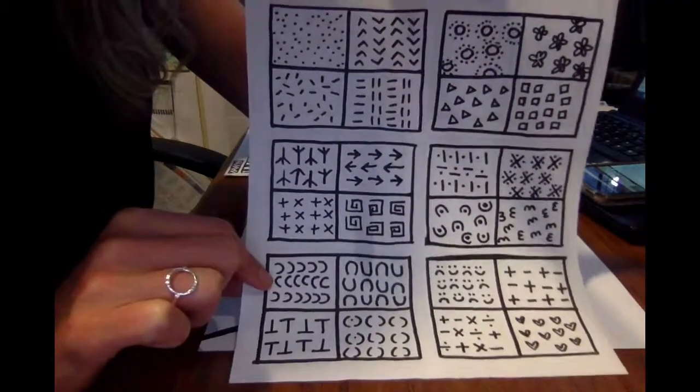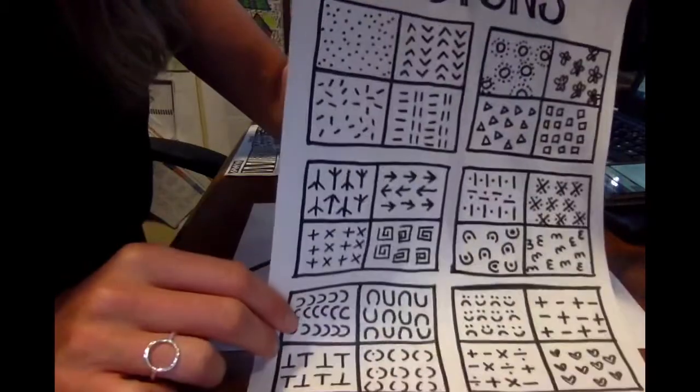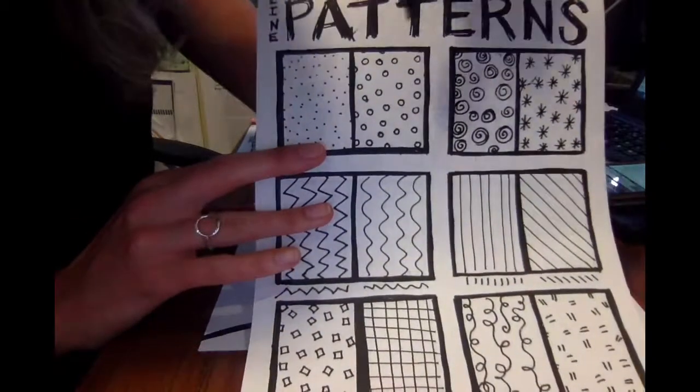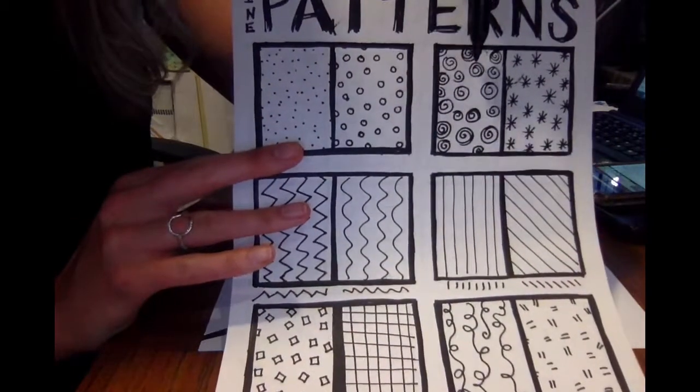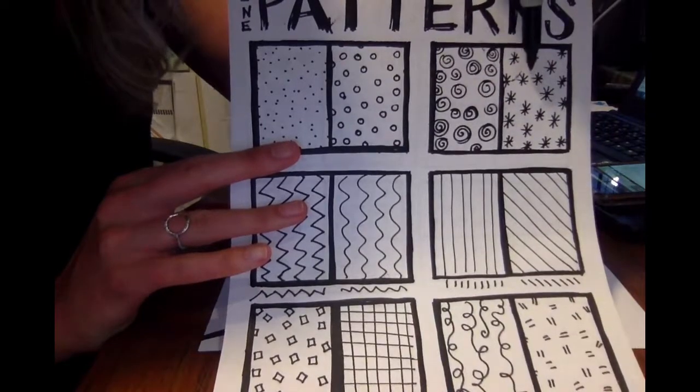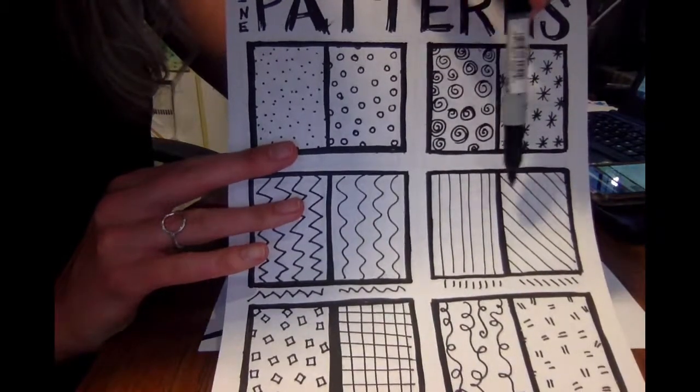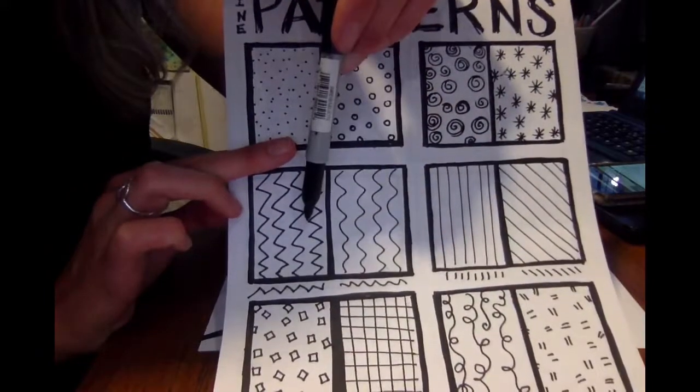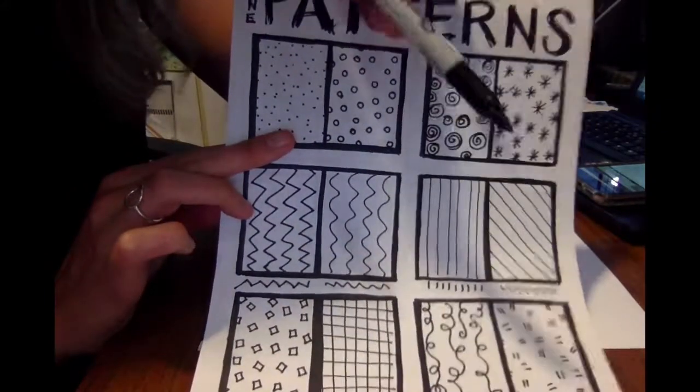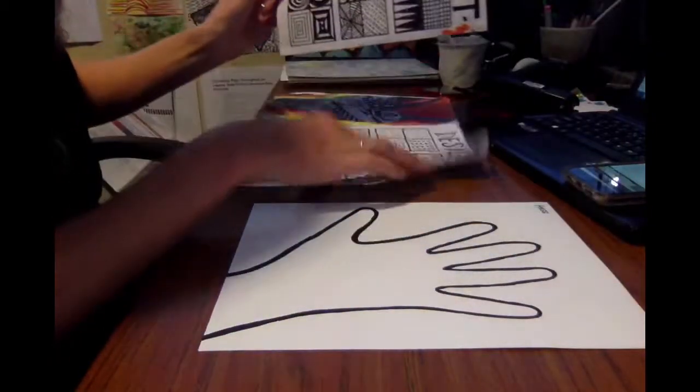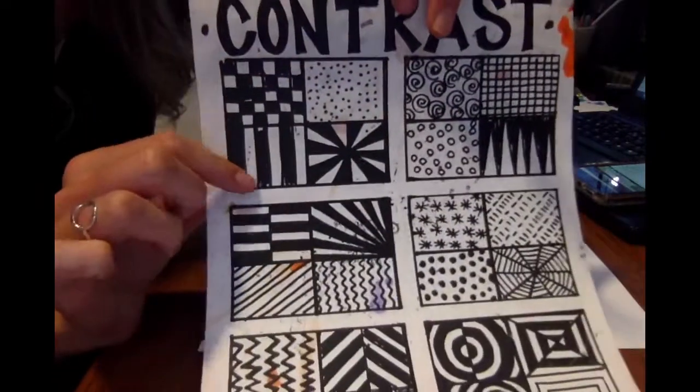So really challenge yourself to think a little bit outside the box on this. Some designs that kids like to use a lot: we have polka dots, that's a pretty common design, swirls, this little star shape, stripes and diagonal lines, wavy lines, zigzag lines. These are most of the common ones that I see and those are okay to use.